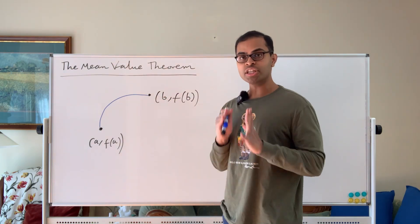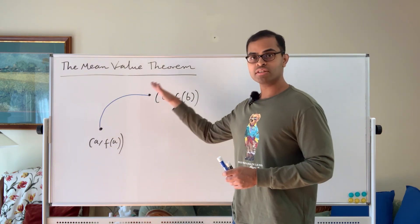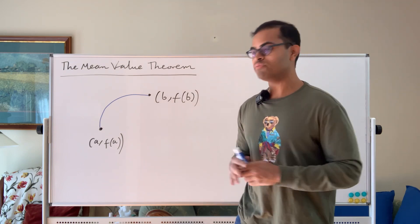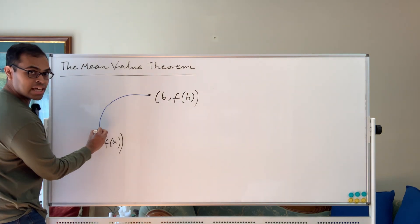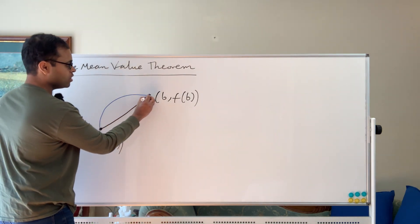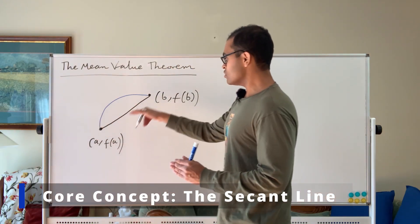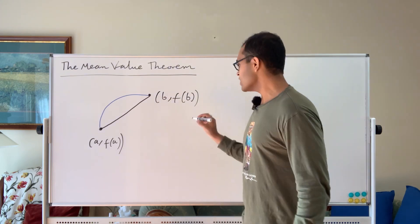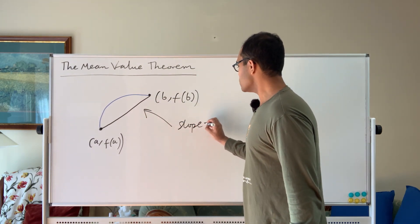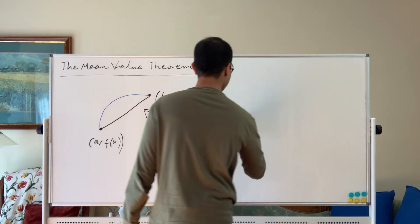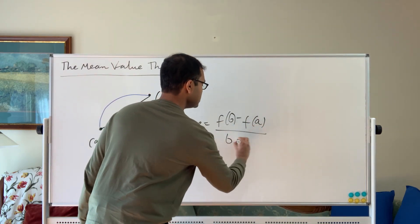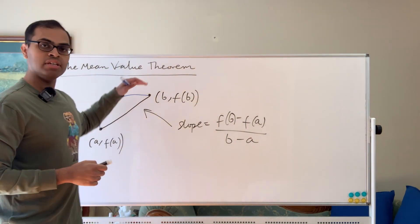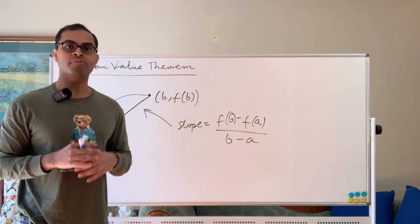So let's understand the following picture. This is a picture of a graph of a function f(x) between two points on the graph, a comma f(a) and b comma f(b). What we do is we draw a line that connects the two points of the graph — this is the secant line. Its slope is going to be the change in y by the change in x. So the slope of the secant line is going to equal f(b) minus f(a) divided by b minus a. And the mean value theorem states that at some point in the graph between a and b, the slope of the tangent line is going to match up with the slope of the secant line.